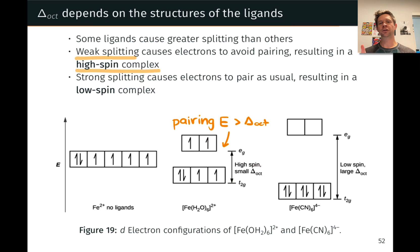So now let's imagine swapping out those six water ligands for six cyanides, creating this anionic complex, Fe(CN)6 4-, still octahedral, still iron 2, still 6 d electrons. The big difference here is that delta oct is much larger in this case.